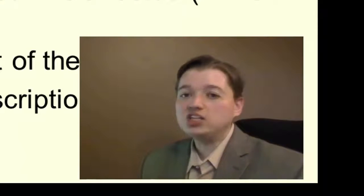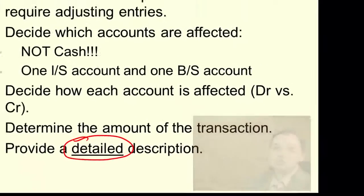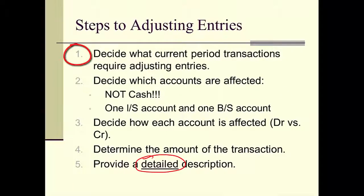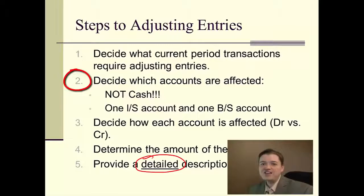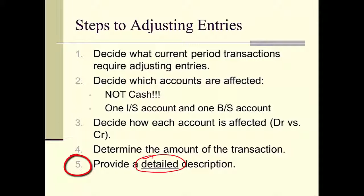Now that we've gone through those basics — what a correcting entry is and how to do it, what an adjusting entry is and the steps to it — let's do some adjusting entries. Here are the steps: Step one, decide whether or not we need to make an entry. Step two, decide what accounts are affected — and remember, if you even think about cash, it's wrong; cash is never involved. Step three, decide whether the accounts need to be debited or credited. Step four, figure out how much. And step five, a detailed description — always detailed, because whoever comes after to review our work needs to know exactly what we did and be able to replicate our equations.